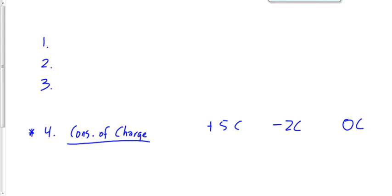Let's say object 1 touches object number 2, and then object 2 touches number 3. I want to find out what the total charge is on each of them after these events. When 1 touches number 2, the total charge between them is plus 5 and minus 2, which is plus 3. The charge on each individual one will be 1.5 coulombs.